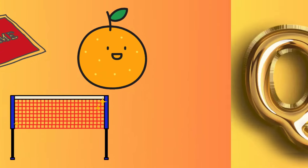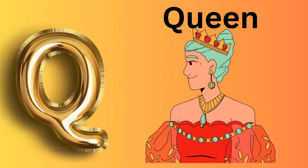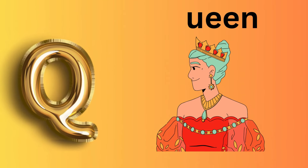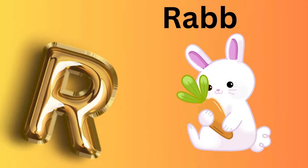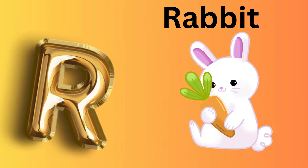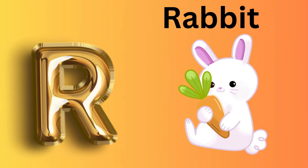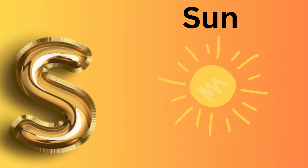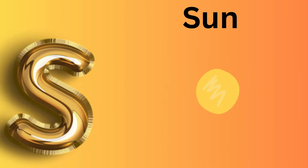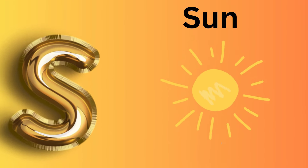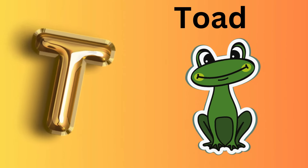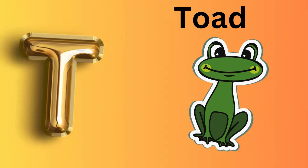Q is for Queen, K-K-Queen. R is for Rabbit, R-R-Rabbit. S is for Sun, S-S-Sun. T is for Toad, T-T-Toad.